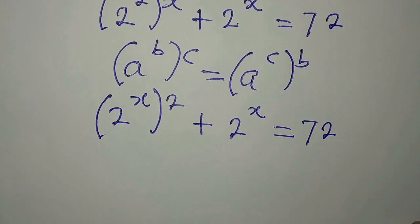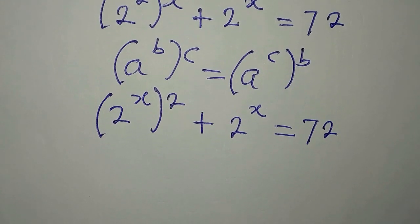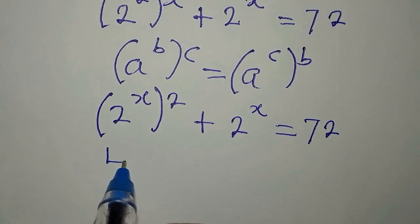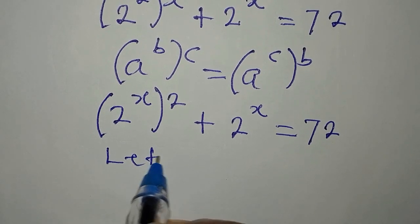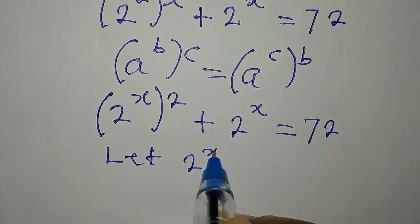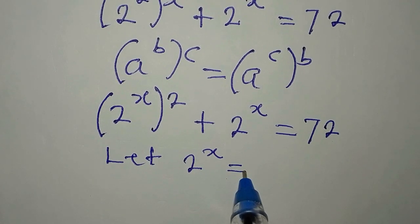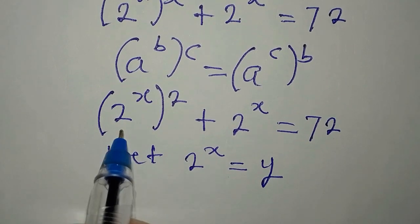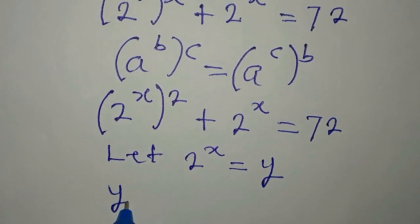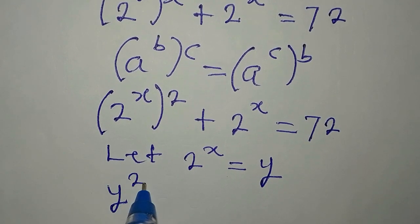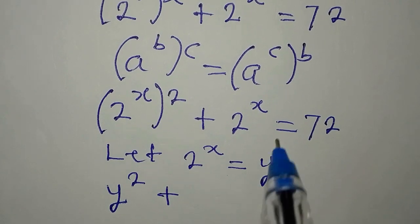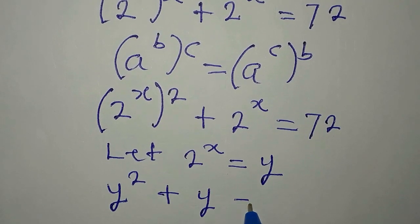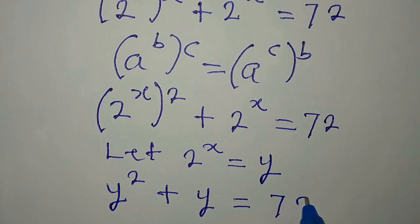Now what do we do? You will see that we have 2 to the power of x in two places. So let 2 to the power of x be equal to y. Now in place of this, I'll write y and this is squared, then plus 2 to the power of x is now y, and this is equal to 72.